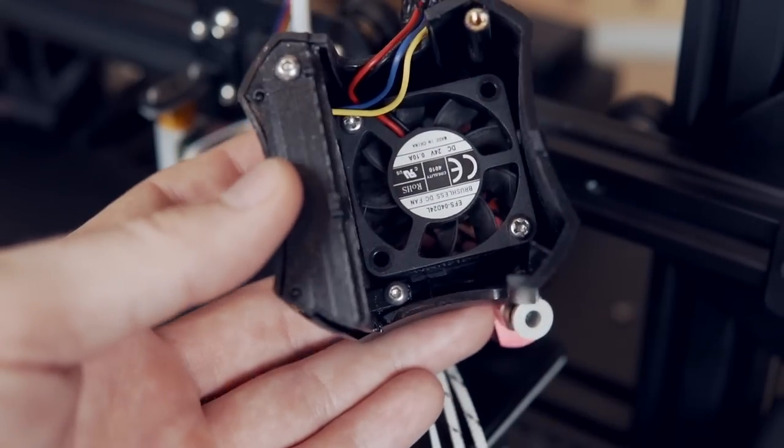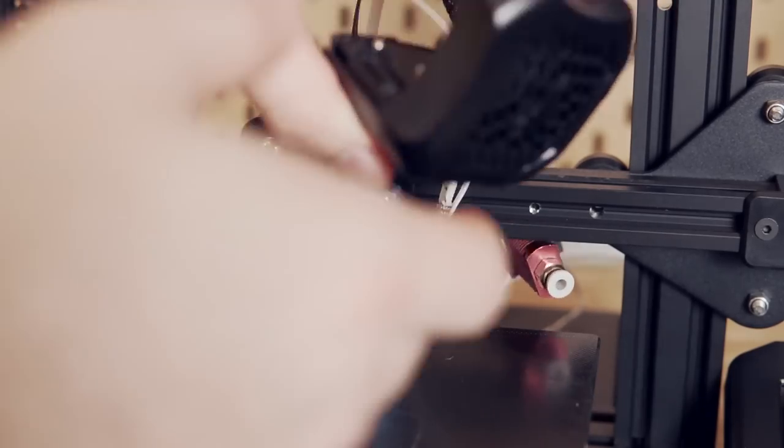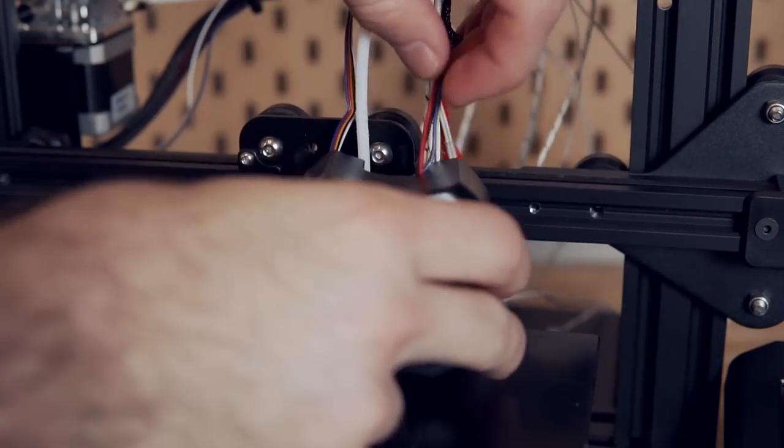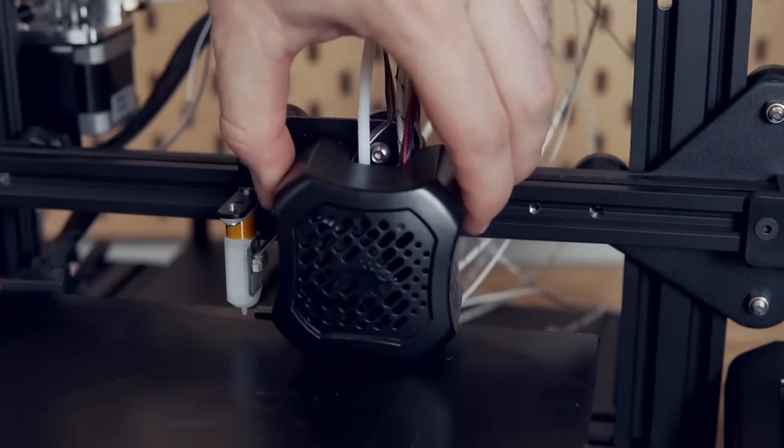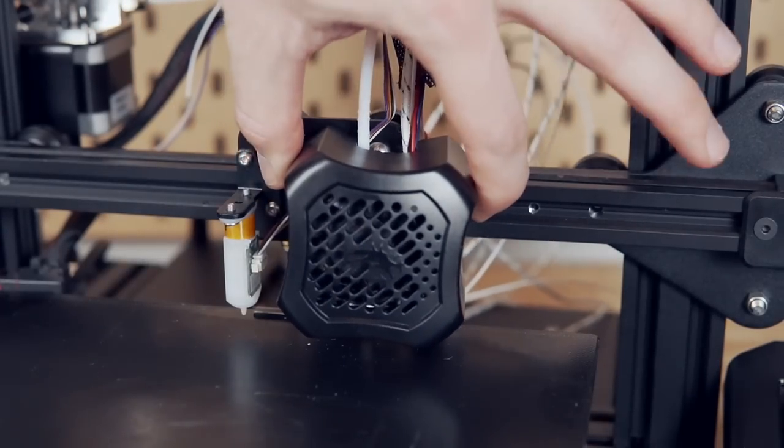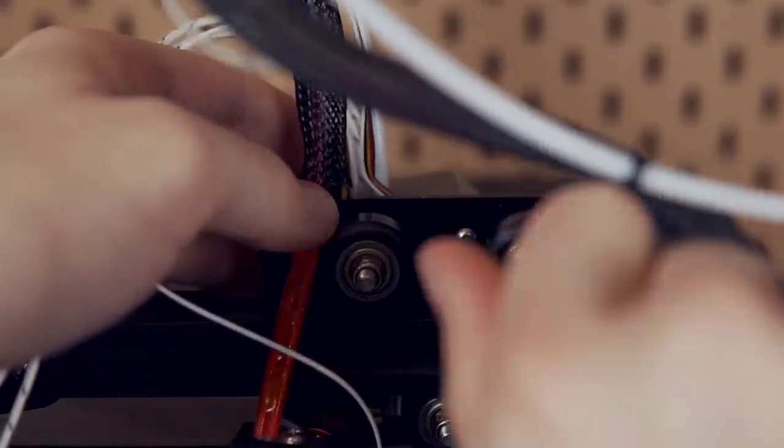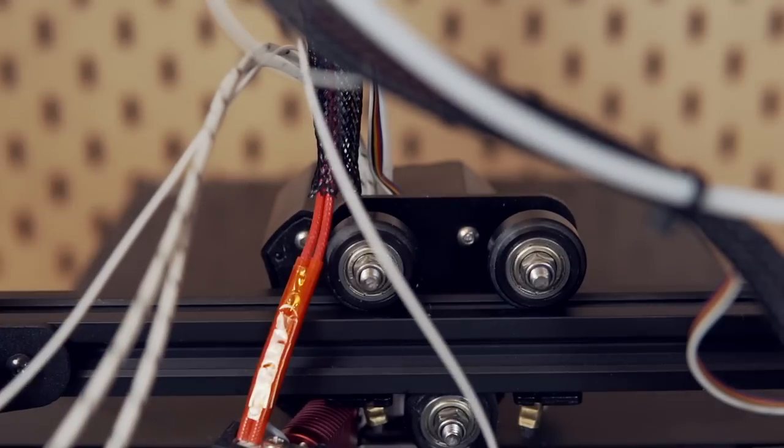With that reassembled, we'll need to take the fan housing as well as the thermistor and heater cartridge, and in my case the BLTouch cable, and do our best to feed that towards the center opening of the fan housing. Then using one hand to secure everything in place, we'll head to the back of the machine and insert the bolt that holds the whole fan housing to the back plate.